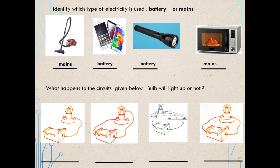What happens to the circuits given below — will the bulb light up or not? In the first circuit, is the circuit complete? No — so the bulb will not light up. Look at the second circuit: is it complete? The wires are not touching the middle part of the bulb, only the glass, so the bulb will not light up.